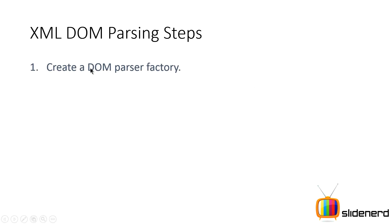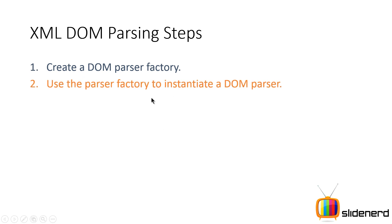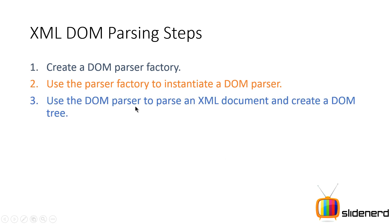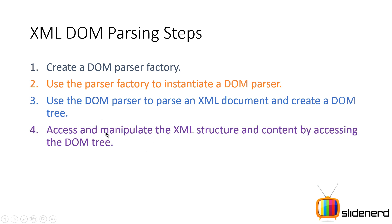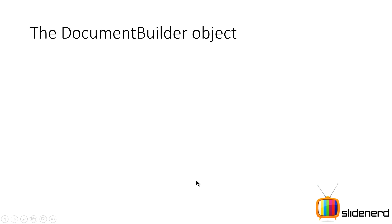Let's look at the steps. Step one: create a DOM parser factory. Step two: use that factory to create a DOM parser object. Step three: use the DOM parser to parse the XML document and create a tree structure, just like the diagram we saw. Step four: manipulate the tree structure using the DOM tree.